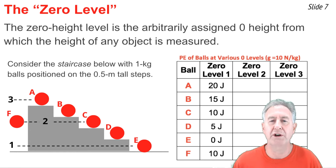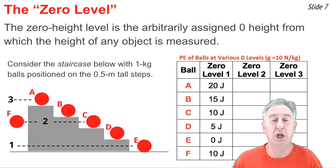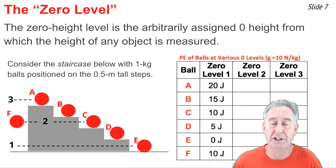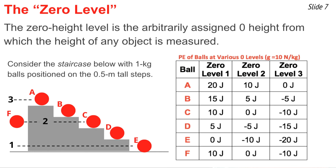Switching to zero level 2, with balls C and F as the zero level, ball A is 1 meter above zero, ball B is 0.5 meters above. Ball D is 0.5 meters below zero, giving a negative potential energy, and ball E is 1 meter below zero with an even more negative potential energy. For zero level 3, assigning ball A at zero height, balls B through E all have negative heights: ball B is −0.5 m, balls C and F are −1 m, ball D is −1.5 m, and ball E is −2 m, yielding negative potential energy values.